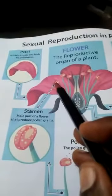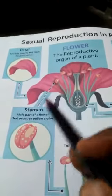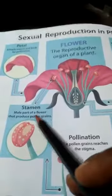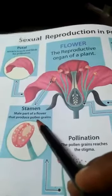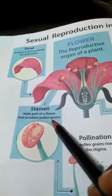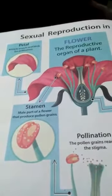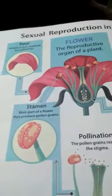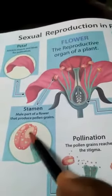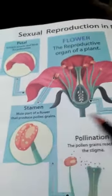Stamen — I have already told you about this. Stamen is the male part of a flower that produces pollen grains. The pollen grains are present in a yellow color inside the stamen. That is the pollen grains — a powdery substance. This is called pollen grains.